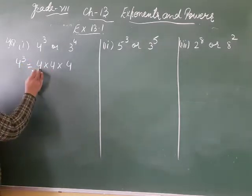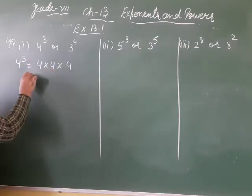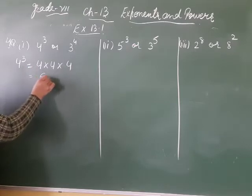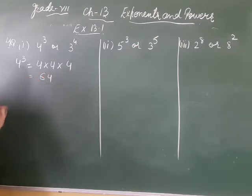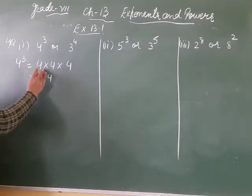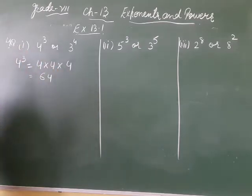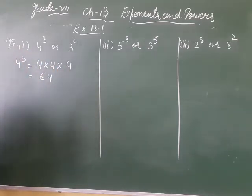So what does it mean? 4 fours are 16, and 16 fours are 64. So 4 raised to power 3 means you multiply your base 4 three times and you get 64.